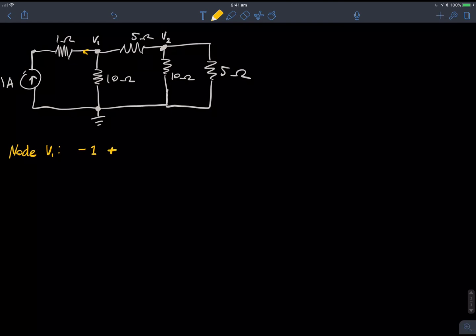And then the current coming out of it downwards from the node would be V1 on 10 by Ohm's law. And then the current going towards the right is V1 minus V2 on 5. And that all equals zero. Alright, so, we've got the equation there.